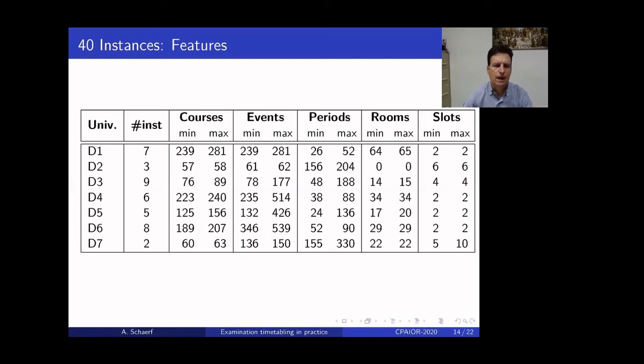Okay. So, we have these seven departments. These are the features. So, we have courses, events, and periods, and rooms. You see, for example, one department has zero rooms. This means that the management decided not to use the software for the rooms, but assigned rooms by themselves. This is the number of slots per day. So, this is also different. Many of them have two slots per day, morning and afternoon. Others have more slots per day.